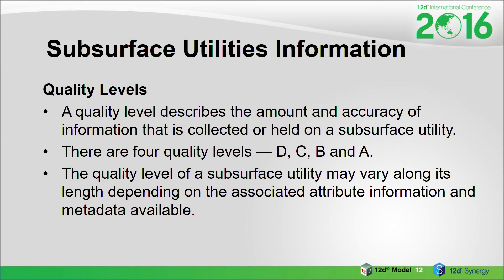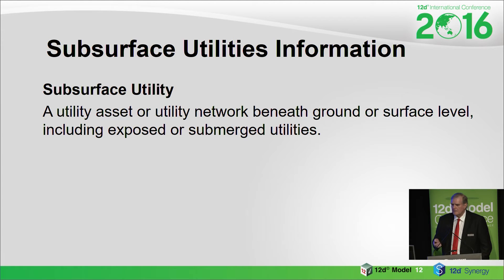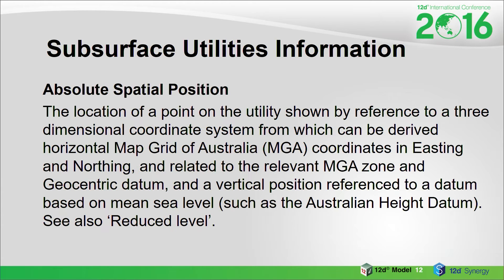Basically, there's a whole lot of quality levels — D, C, B, and A. They're talking about half a million dollars to put this together, and you can have D, C, B, and A quality levels. They're very important because they're telling everyone what to do. It's mainly for subsurface utilities, but you really have to think it can work for anything where you should have some sort of quality rating. It gives you a level of what they mean by these different quality levels.